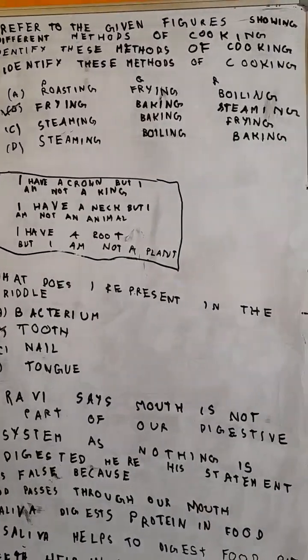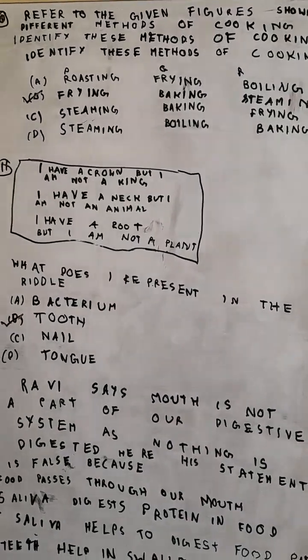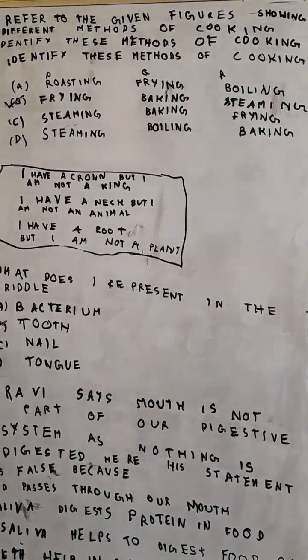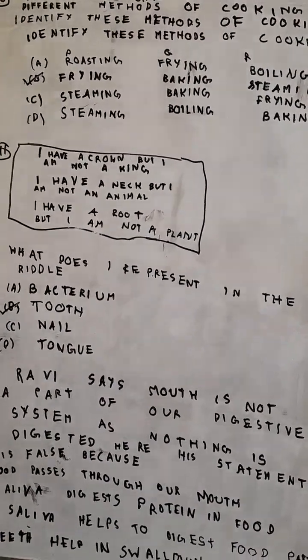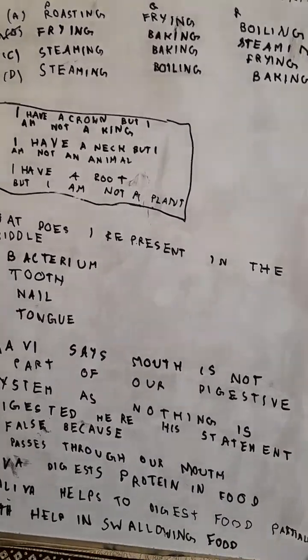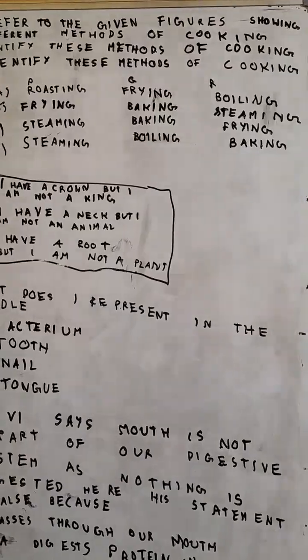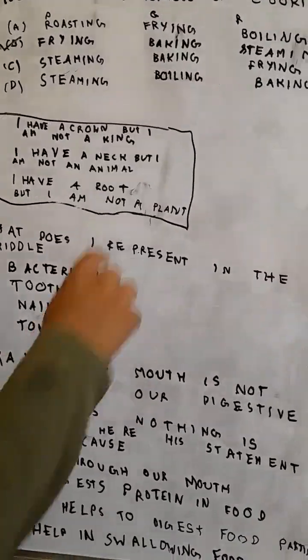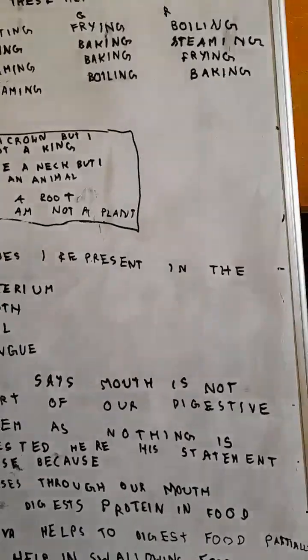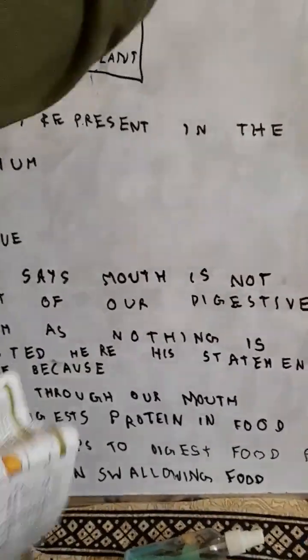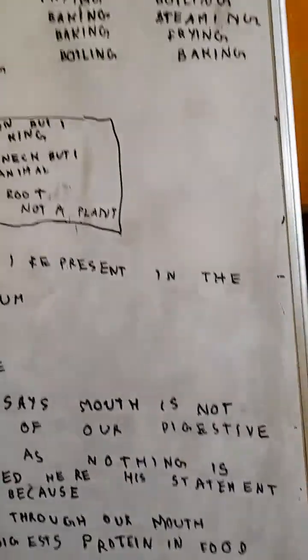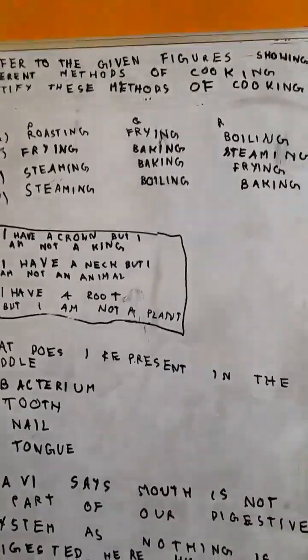Refer to the given figures showing different methods of cooking. Identify these methods of cooking and select the correct option. This is frying, this is baking, and this is steaming. So the correct answer is option B: frying, baking, steaming.